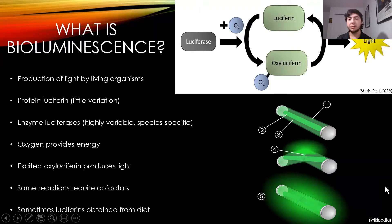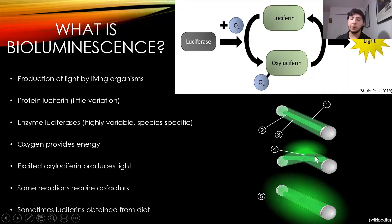Some of these reactions require cofactors like magnesium or ATP, but some do not. There are also a few organisms that obtain the chemicals for this reaction from their diet. The best way to think about how this reaction occurs is by means of a glow stick — you have two chemicals separated by a barrier, and when you crack it, the chemicals mix and light is produced. It's a similar process, not entirely, but it's a pretty good analogy.